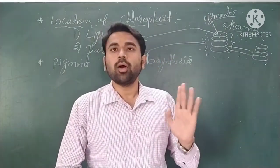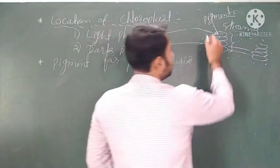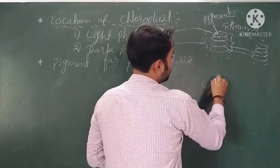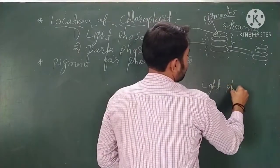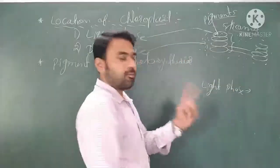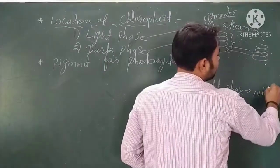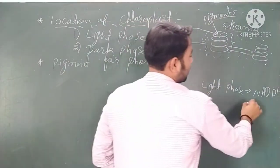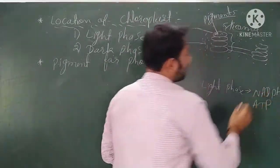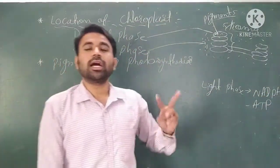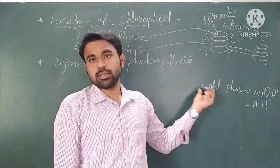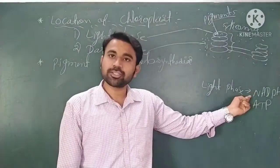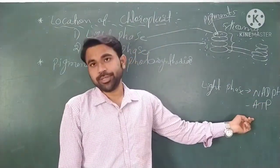What happens in these two phases? In the light phase, two molecules are synthesized: first is NADPH2 and second is ATP. So two molecules — NADPH2 and ATP — are produced in the light phase.